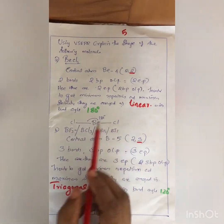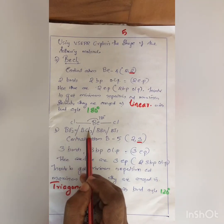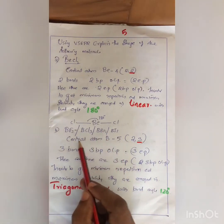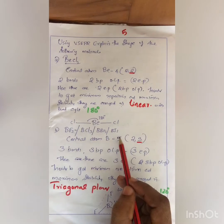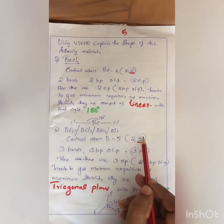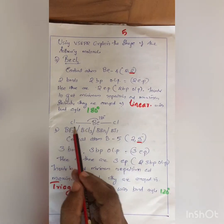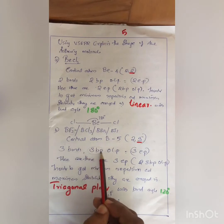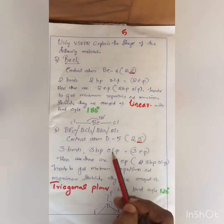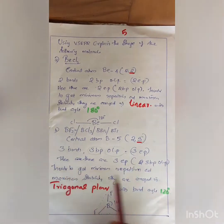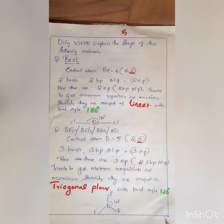Next is the BF3 molecule, similar to BCl3, BBr3, and BI3 — all have similar geometry. The central atom is boron, atomic number 5, configuration 2,3. The outer shell has 3 electrons forming bonds with the 3 fluorine atoms. Therefore 3 BP and 0 LP, giving 3 EP. In order to get minimal repulsion and maximum stability, they are arranged in trigonal planar with bond angle 120 degrees.